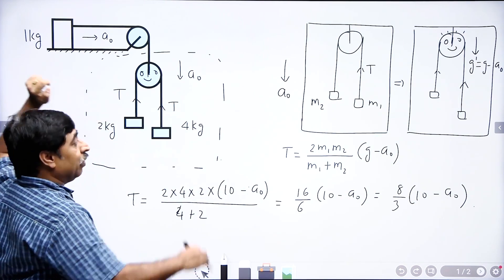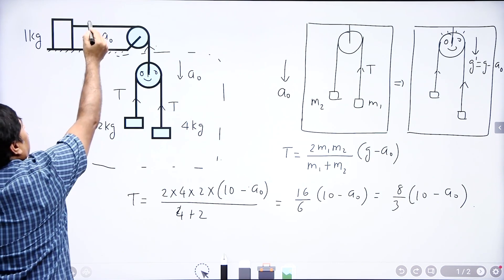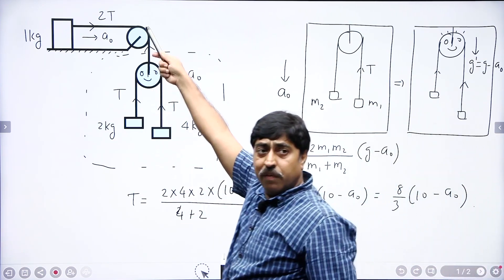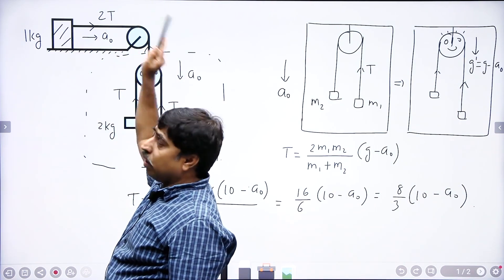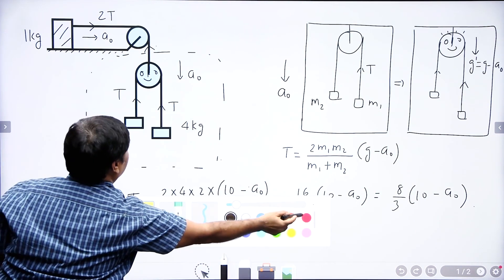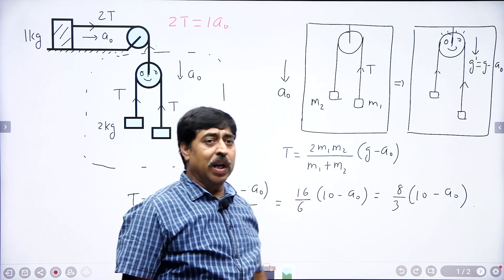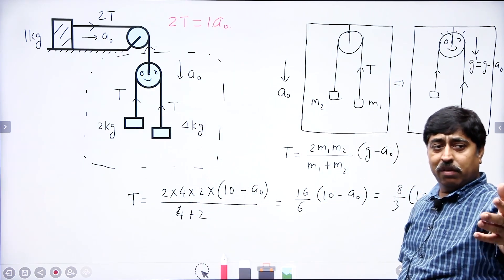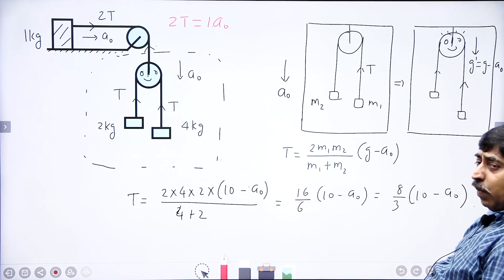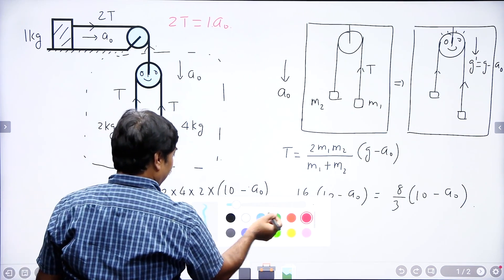Now, if you know this tension T, and since the pulley is massless, the tension in the upper string will be 2T. So tension in the upper string is 2T. On this block — the 1 kg block on the table — the only horizontal force acting is 2T. So for the motion of this block: 2T = 1 kg × A0, which gives 2T = A0, so T = A0/2. We have also found that T = (8/3)(10 - A0). So substituting T = A0/2 into the tension equation: A0/2 = (8/3)(10 - A0).